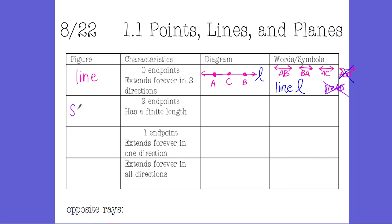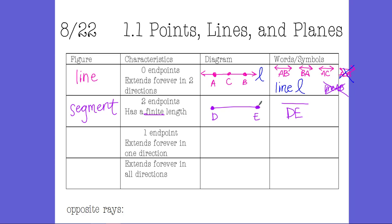The next thing is a segment. While a line is infinite and extends forever, a segment is finite — it has a specific length. I could take a ruler, hold it up to my segment, and measure it. A line goes on for eternity so you can't measure a line. A segment has two endpoints. Here's endpoint D and endpoint E — this is segment DE. You have to use the two endpoints to designate what the segment is.